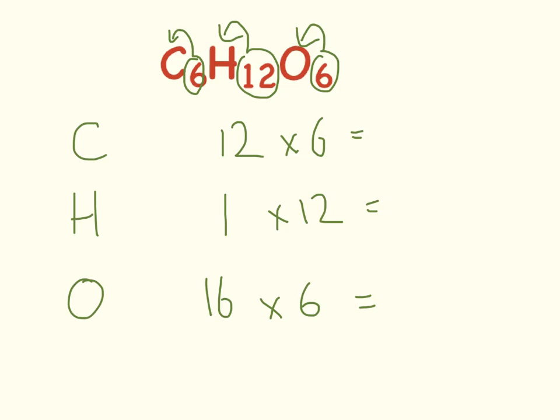So 12 times 6 equals 72. 1 times 12 equals 12. 16 times 6 equals 96. Add those all together and we get 180.